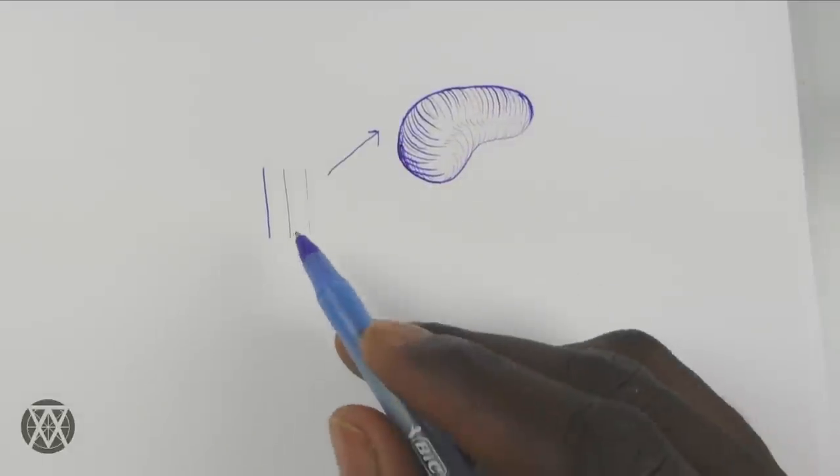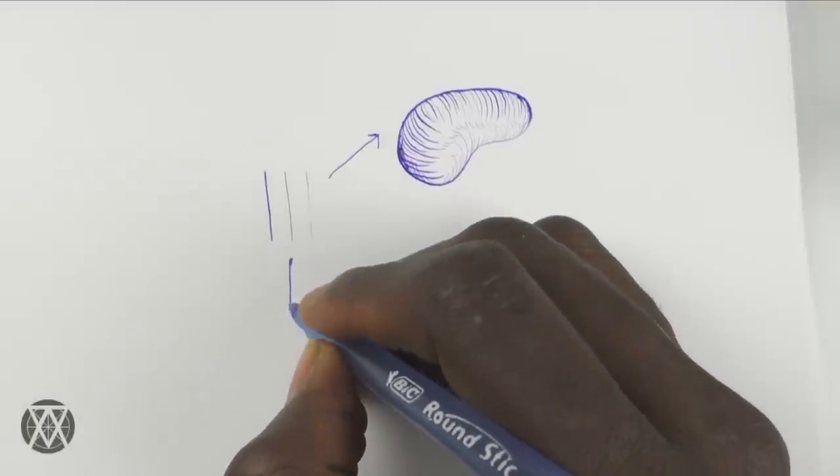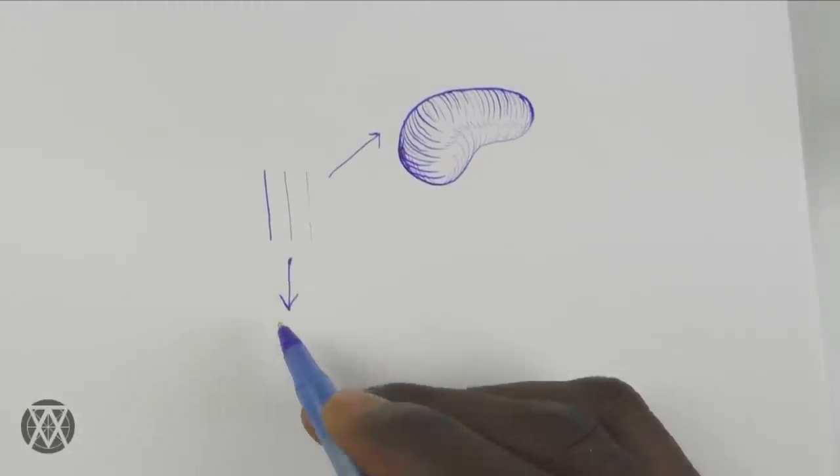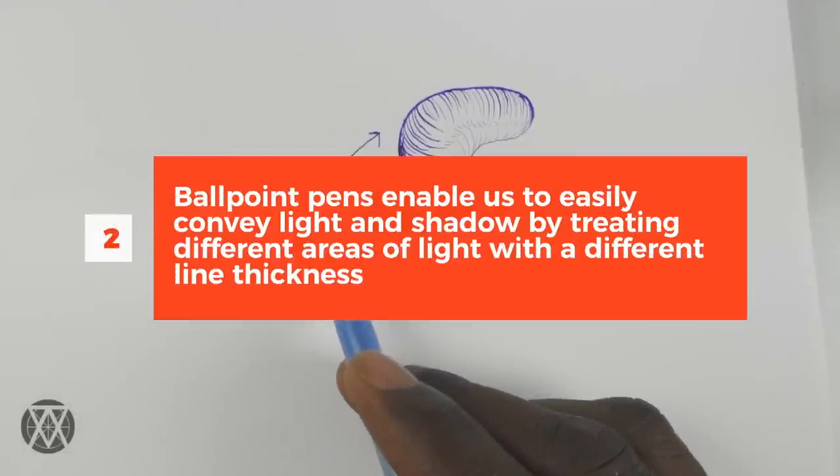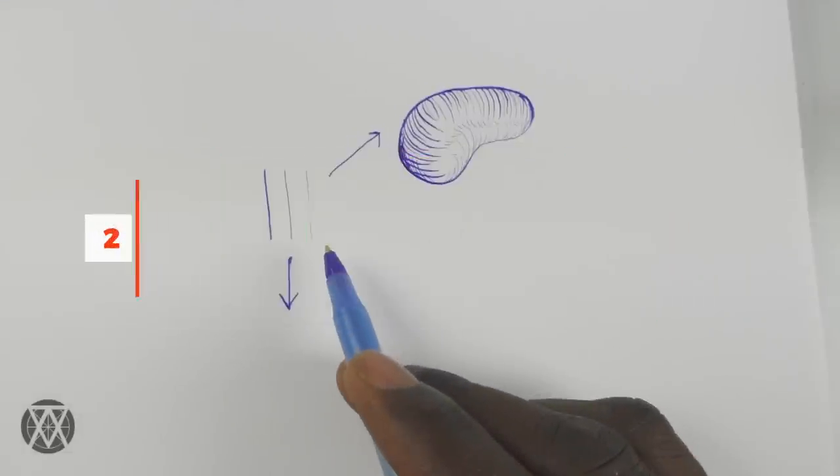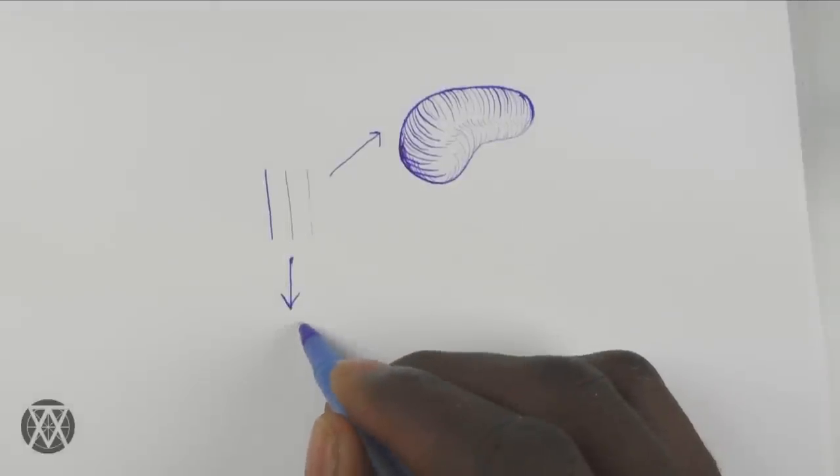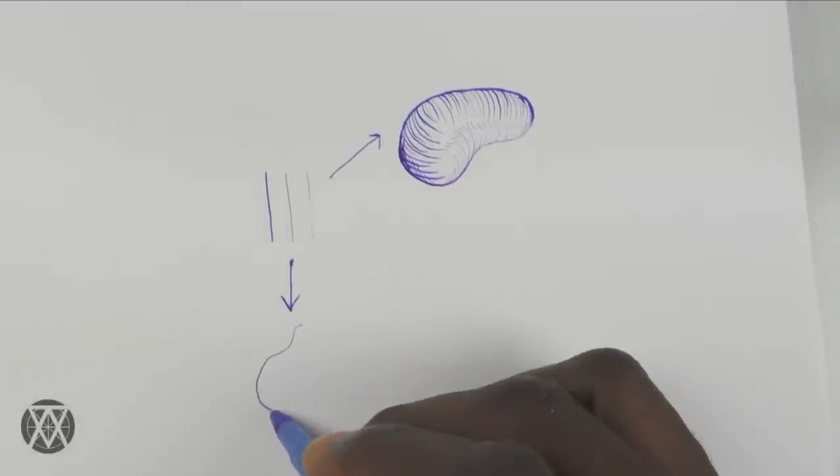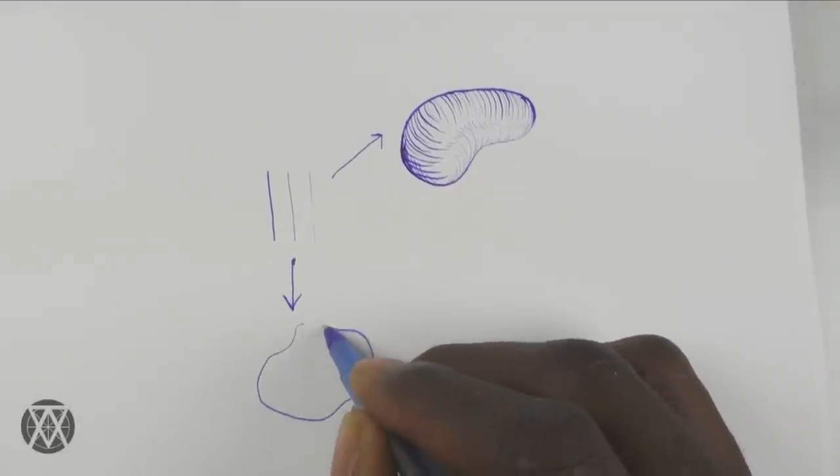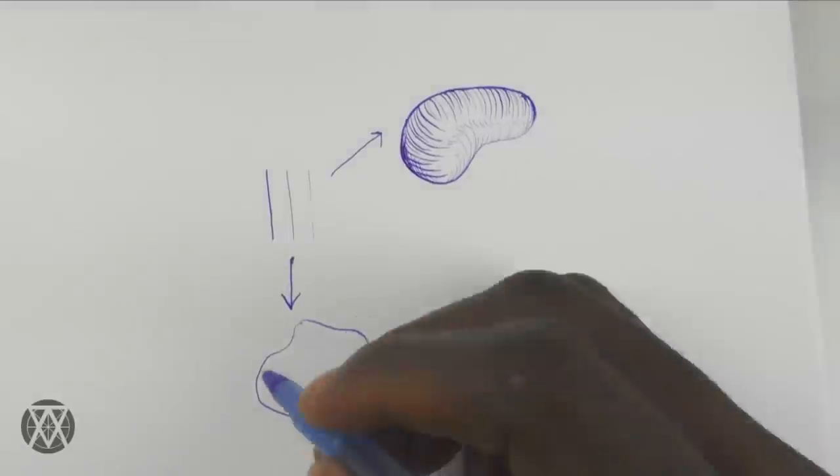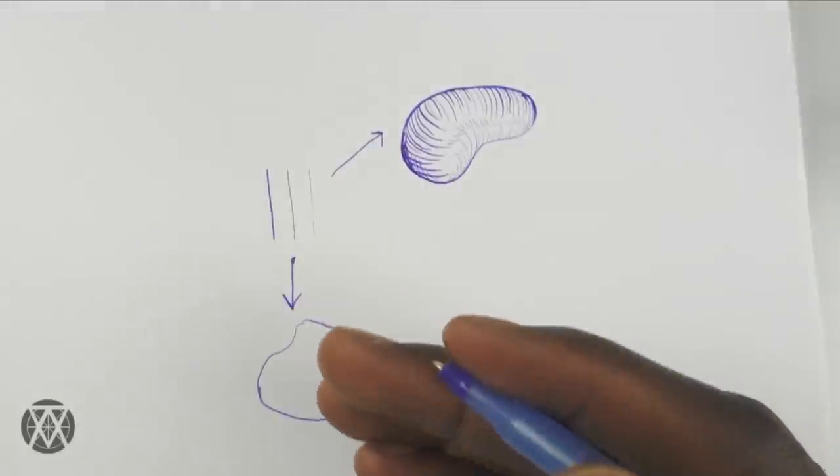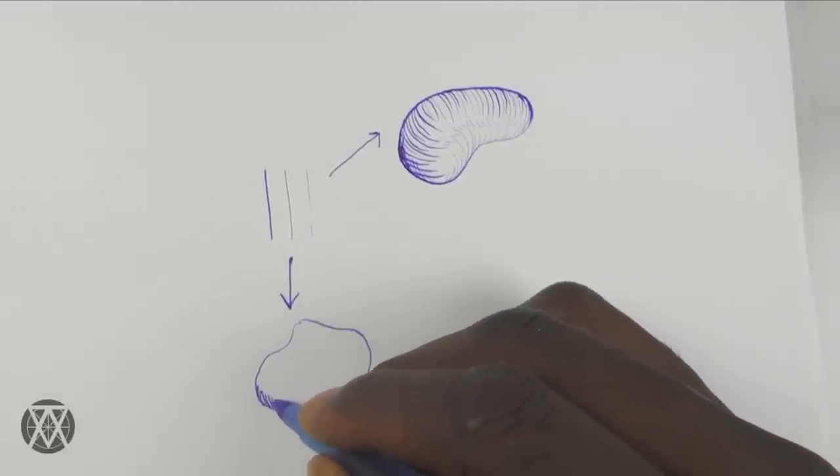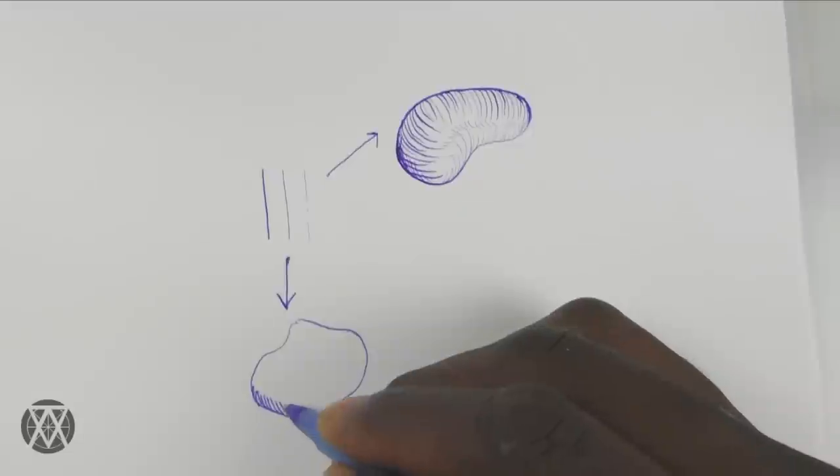Now what this also shows us is that I'm able to create lines that have different values. See, so drawing a simple form just like this, let's just make up a shape here. Now I can actually say let's just say a light source is coming from the top, I can make lines that indicate shadow just by the thickness of the lines.